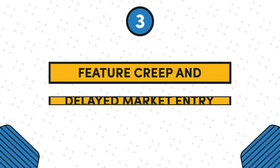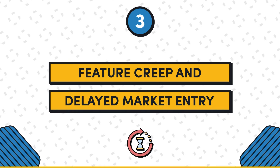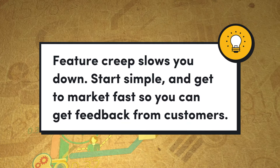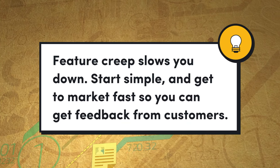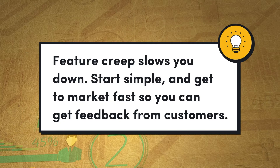Mistake number three: feature creep and delayed market entry. Just because you can build with no-code and build so much faster, that often leads to building many features without launching. Building a lot of features slows you down, slows your time to market, and makes your app more complicated and slow. Start simple, get to the market as soon as possible, get in front of your users, and get feedback.